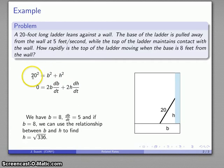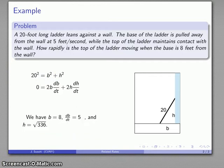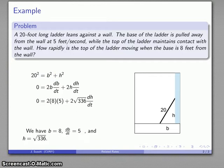So if b is 8, I know this is 20 and so that tells me h after all the dust settles is square root 336. So that's just substituting my value of b into this equation here and solving for h.